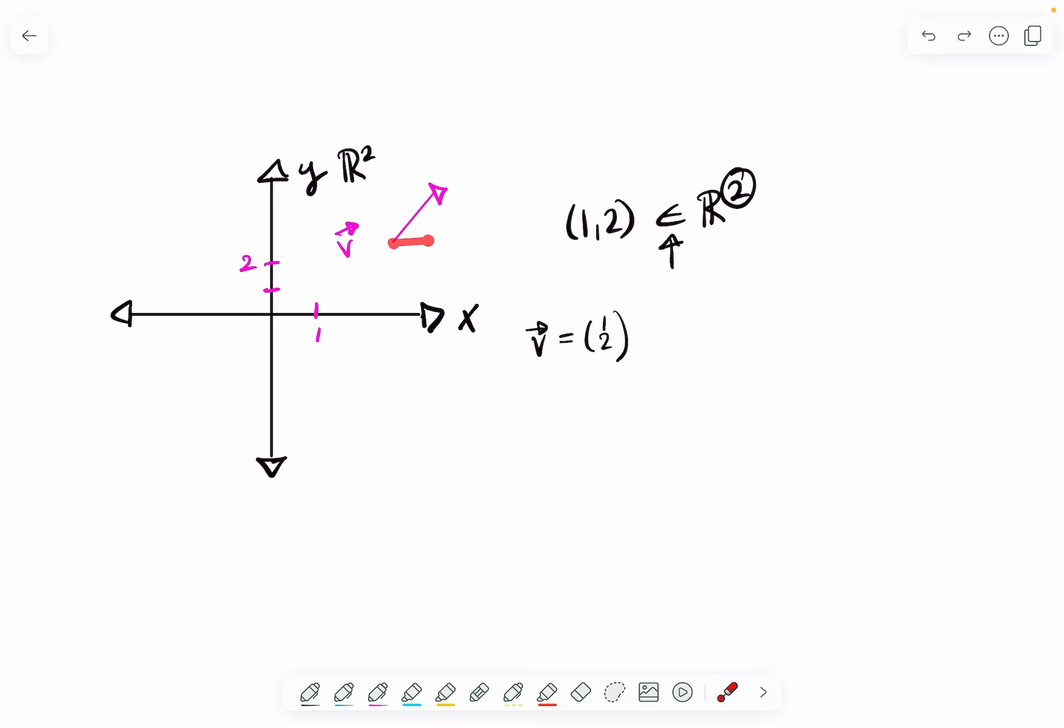It's literally the same size. It still goes 1 to the right and then 2 up. So we're left with this vector here. But again, by default, we always start at the origin.